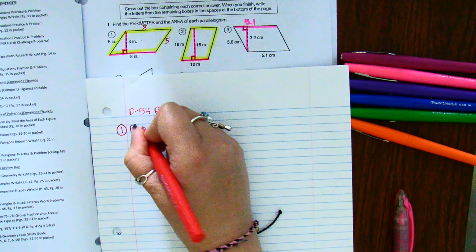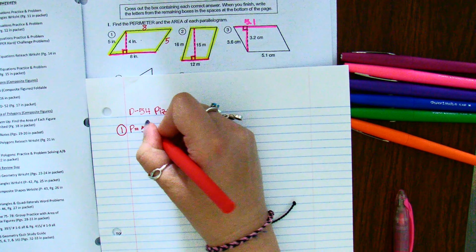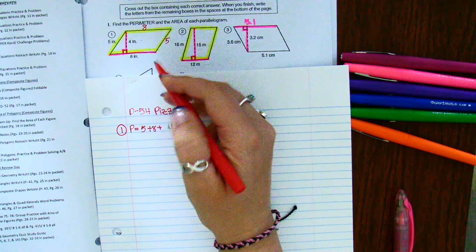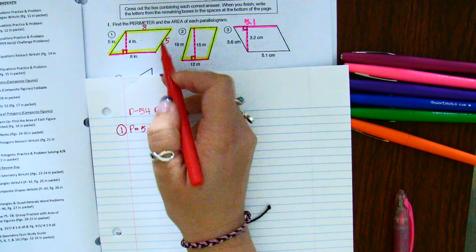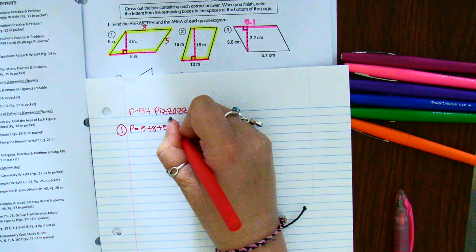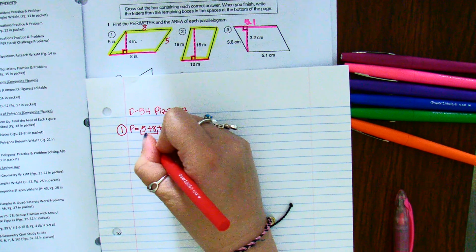plus that eight, plus this five, plus this eight. Now just go ahead and combine all those. Five and eight makes 13.